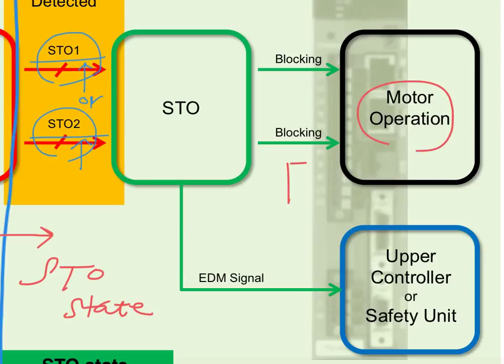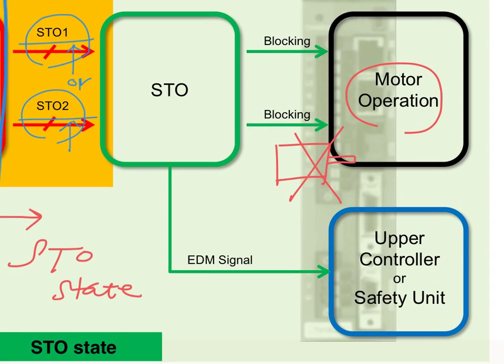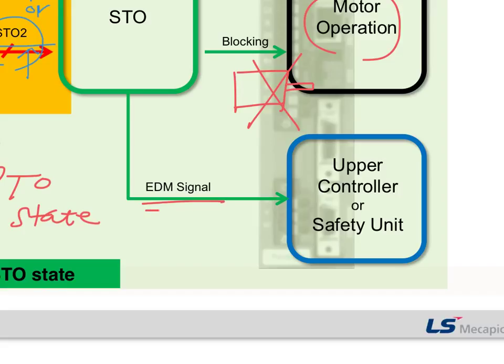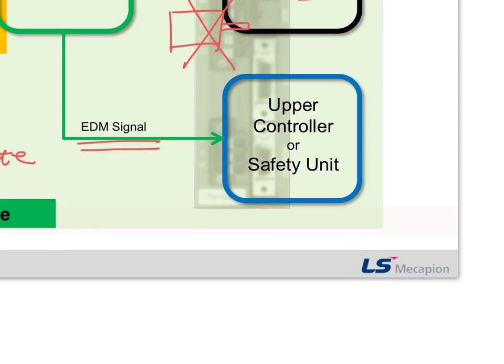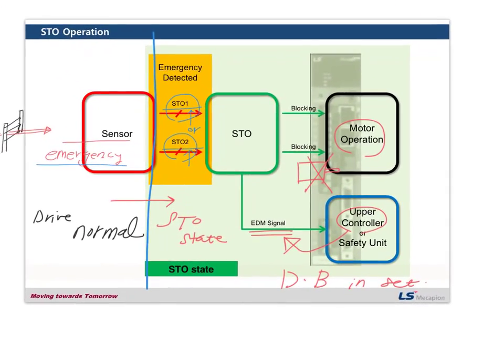And the EDM signal is generated by STO state. So if you have any safety unit, something like a dynamic brake, and if it is set in correct way, it will operate. And your upper controller will detect this EDM signal. And this is how the STO works.